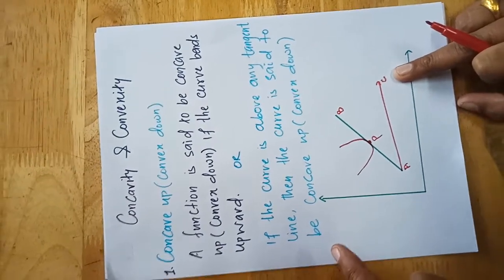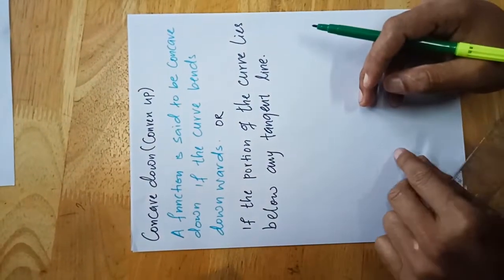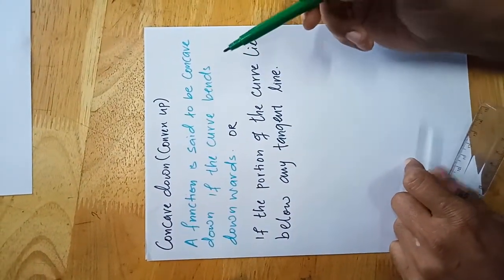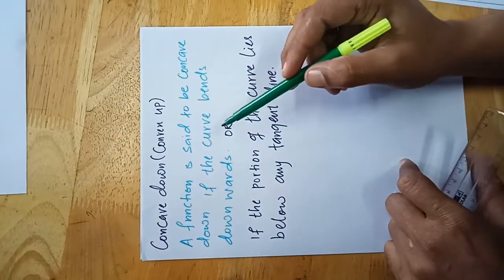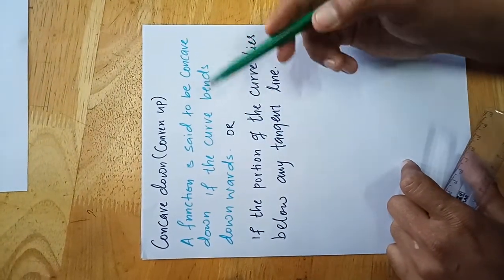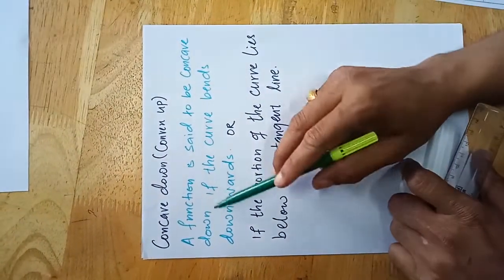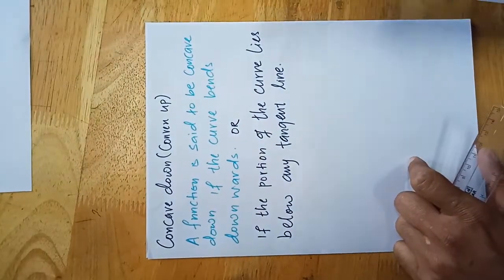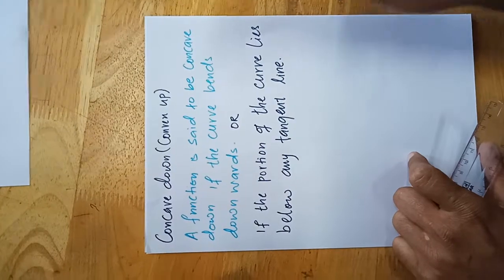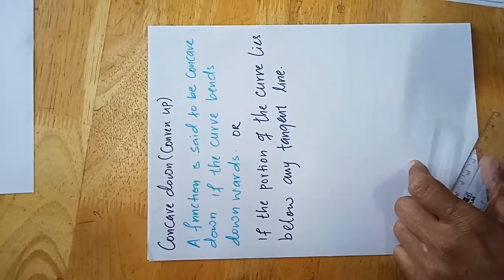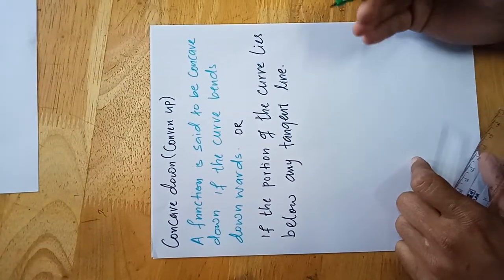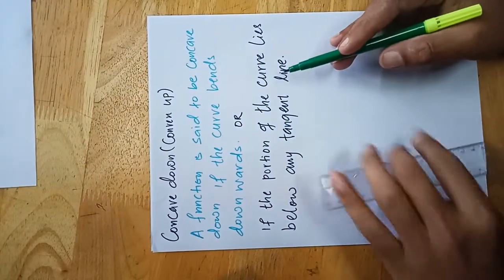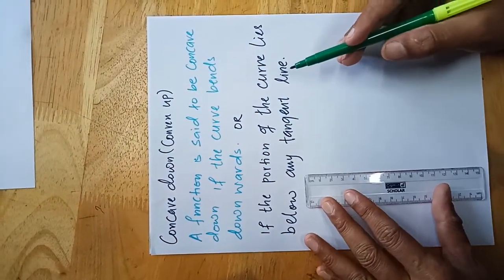Now, concave down — which is also called convex up. A function is said to be concave down if the curve bends downward. If the portion of the curve lies below any tangent line, then that kind of curve is called concave down.